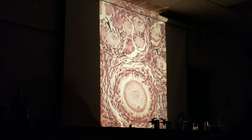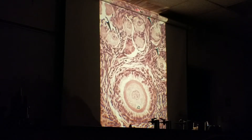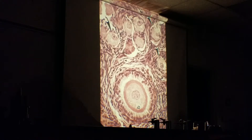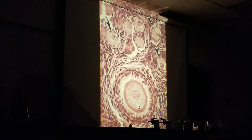Well, what's the layer up here called? The tunica albuginea — there's the T.A. We look at the albuginea, and then these cells right underneath it — right there — primordial.